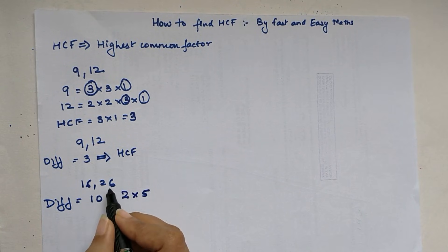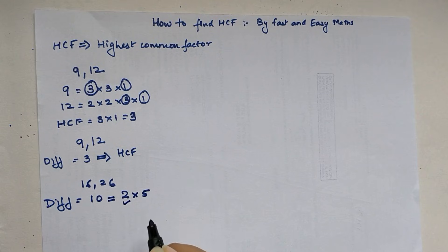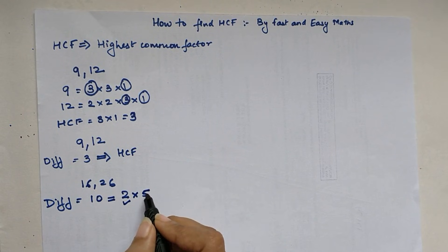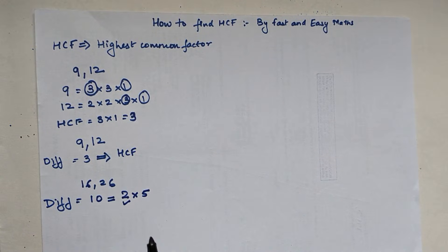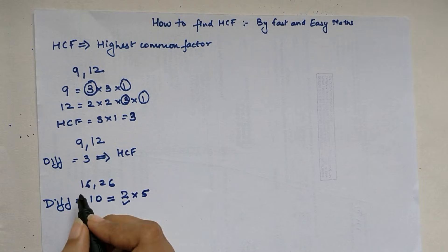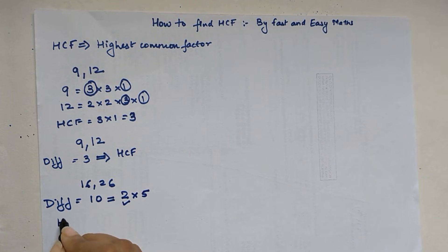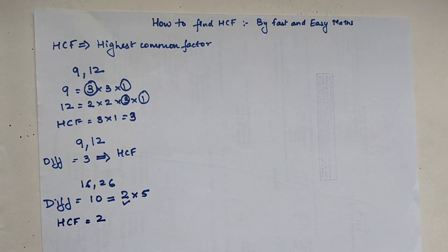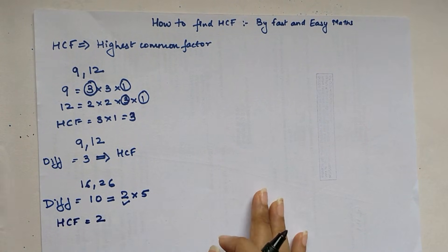Now let us check whether 2 is a factor of 16 — yes. Is 2 a factor of 26 — yes. We also check for 5, but 5 is neither a factor of 16 nor 26. So we found that 2 is a common factor of both 16 and 26, making my HCF equal to 2.